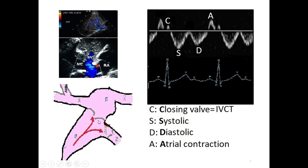After the systolic phase, diastole begins. The tricuspid valve opens and blood rapidly drains from the right atrium into the right ventricle. This again creates negative pressure inside the right atrium, sucking blood from the hepatic vein toward the right atrium. We see a second negative deflection on the Doppler called the D wave, because it occurs during diastole.